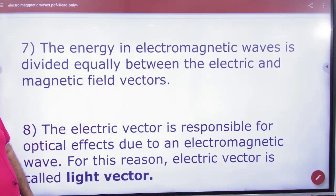Energy in EM wave is equally divided between electric and magnetic field. So half the energy is electric, half is magnetic.